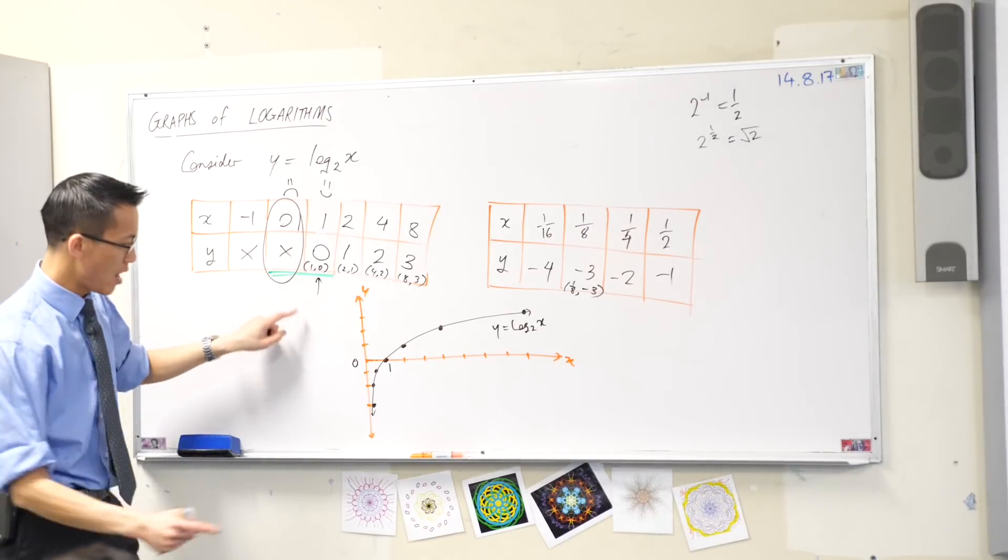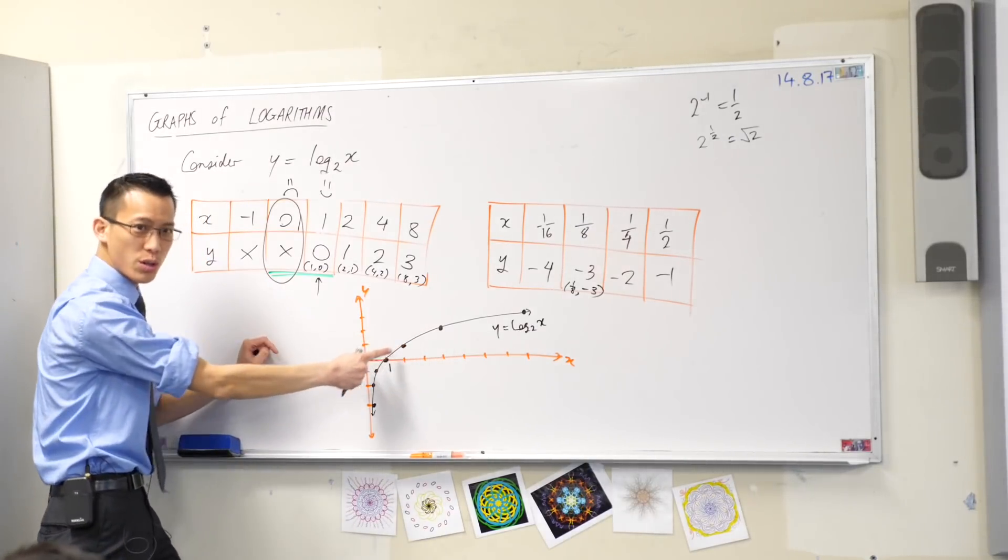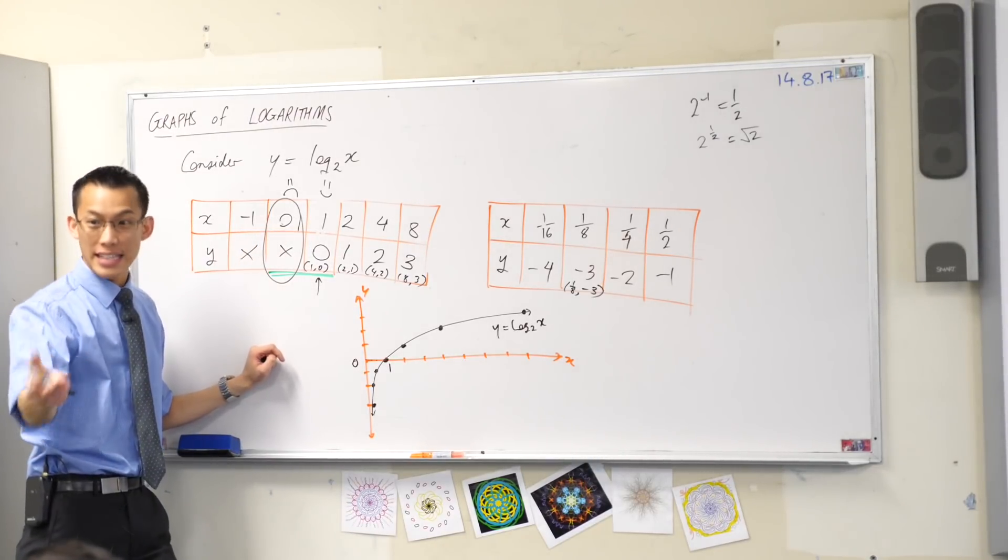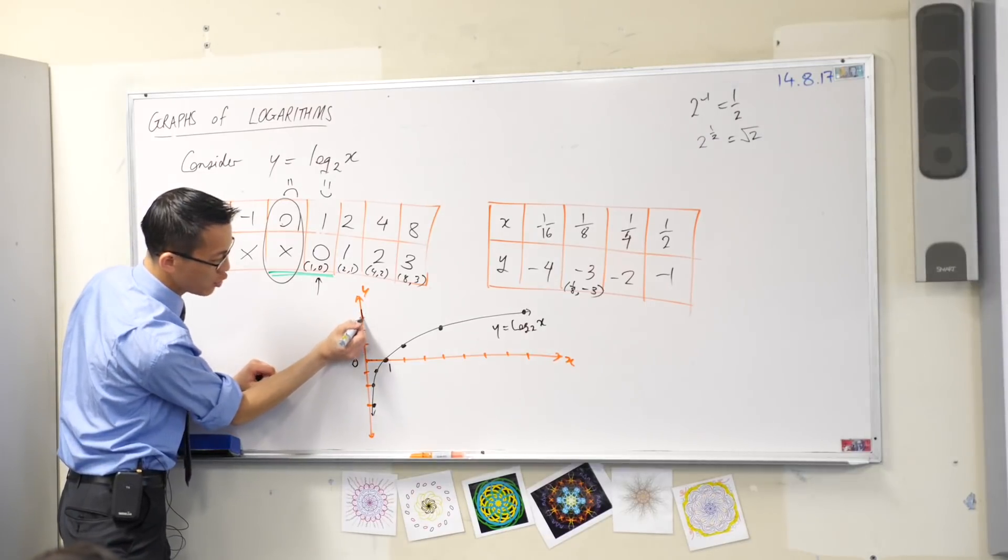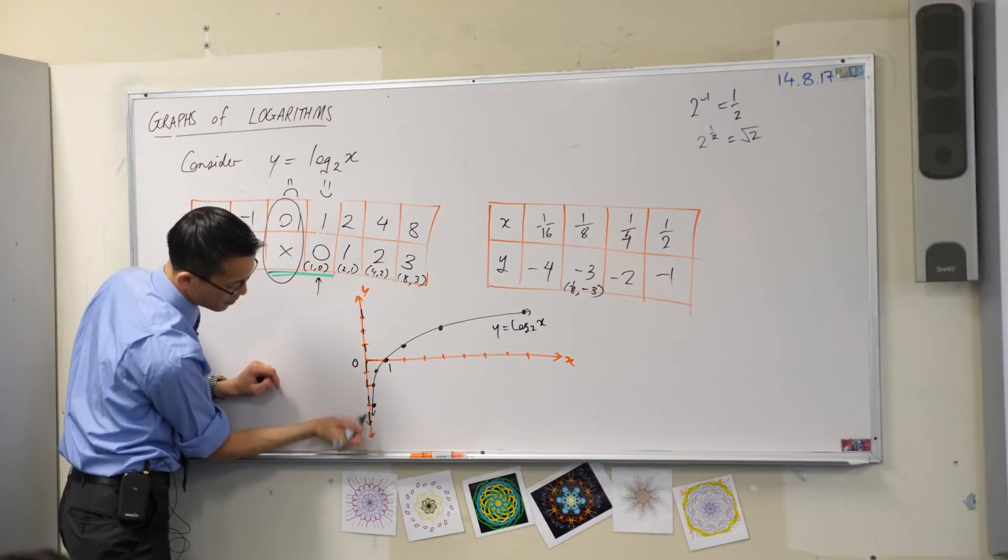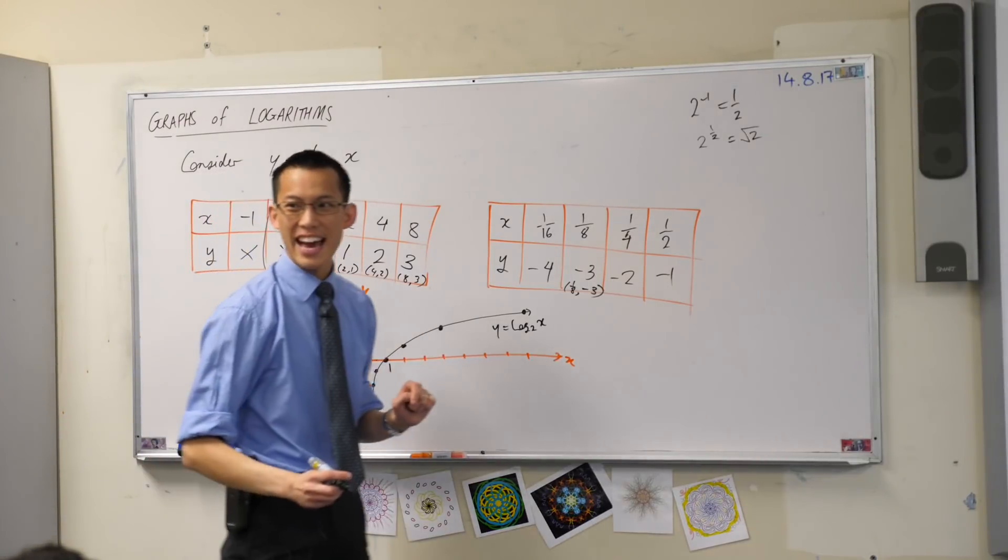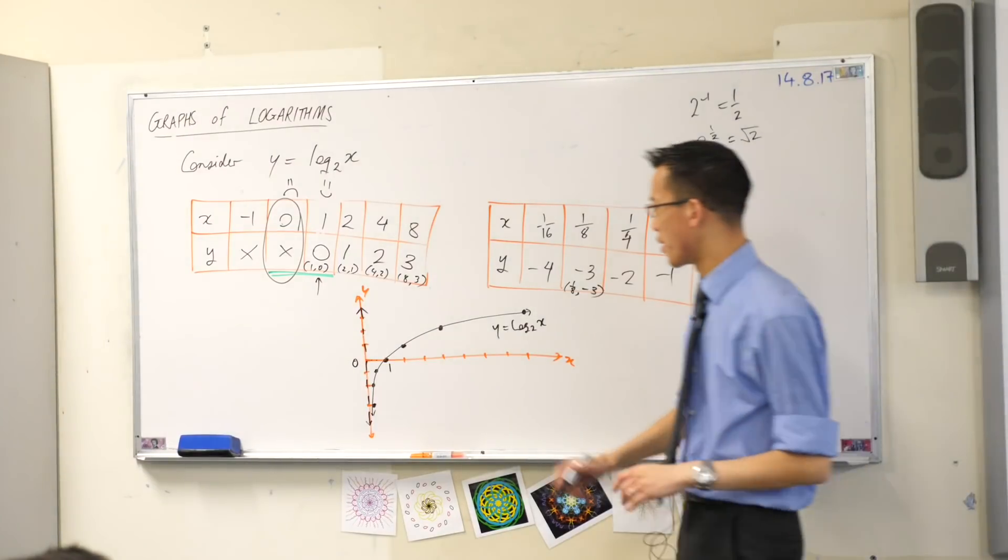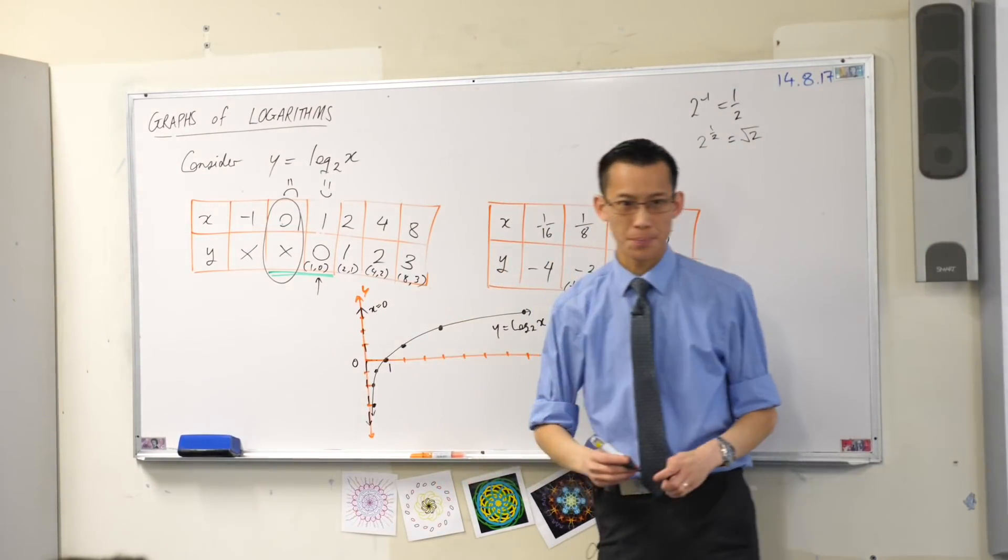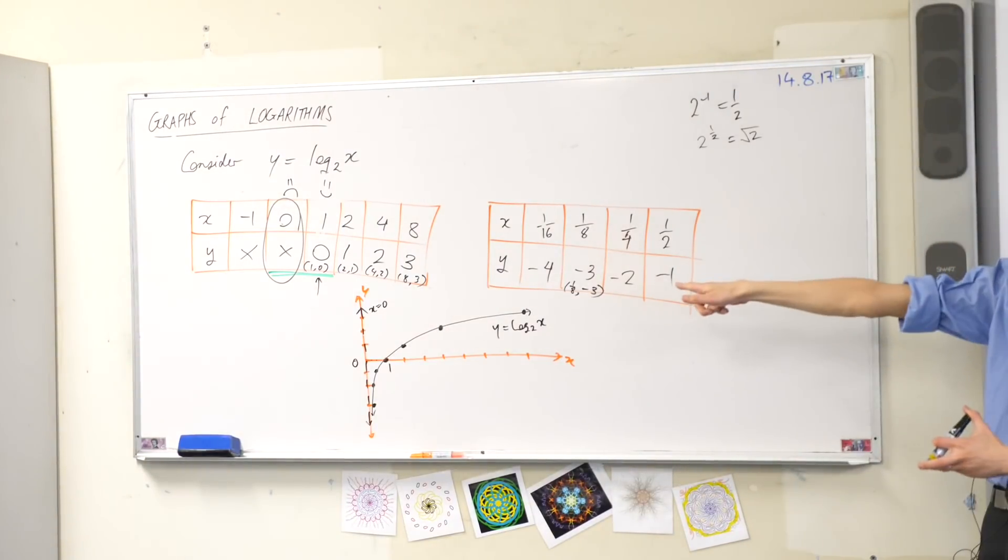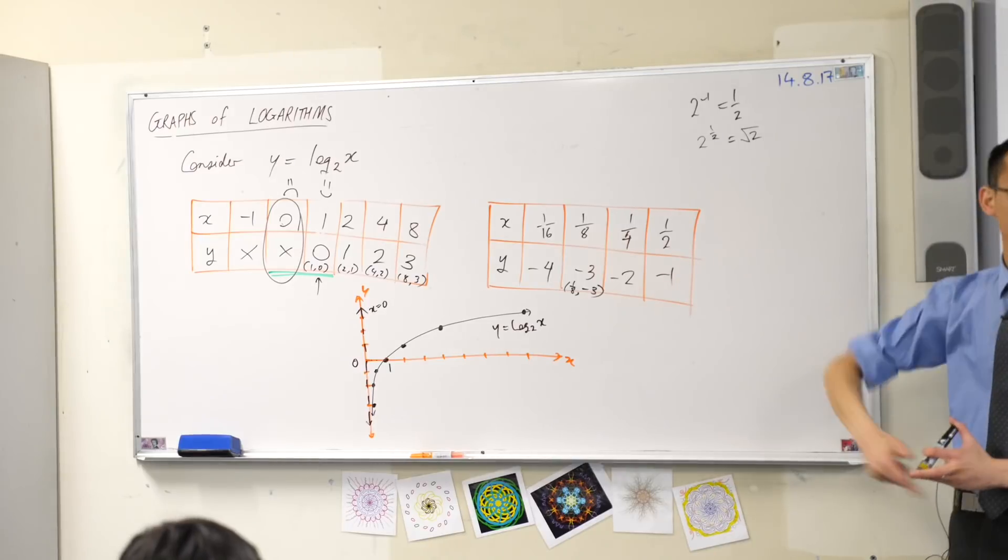Now we have a name for this, right? We have a name for what happens when you get closer and closer and closer, but you can never get there. Starts with an a. What's it start with? It's an asymptote, right? Right here. Can you draw in a dotted line? That's the asymptote. The equation of the asymptote is x equals zero.